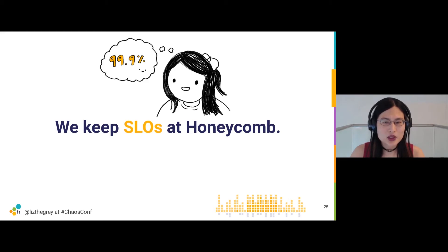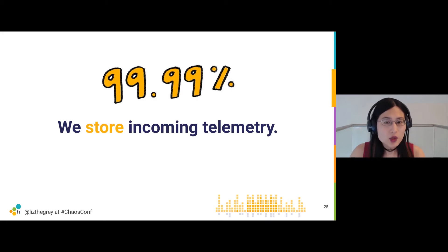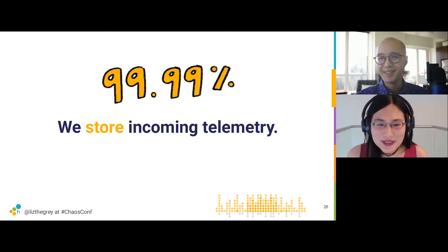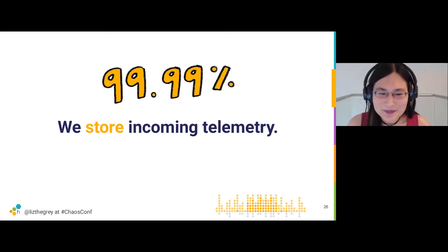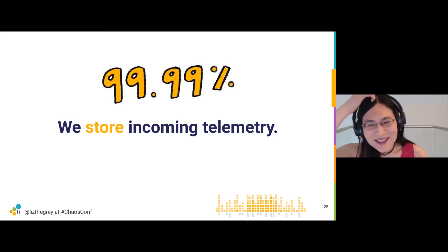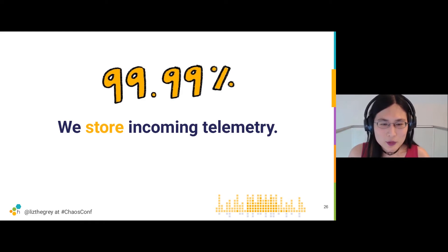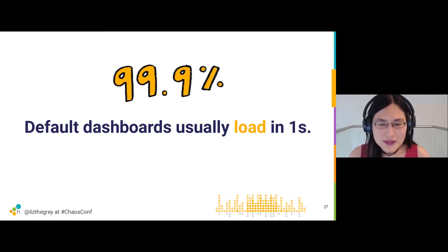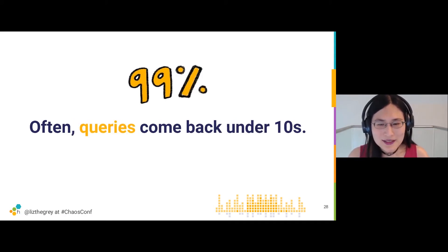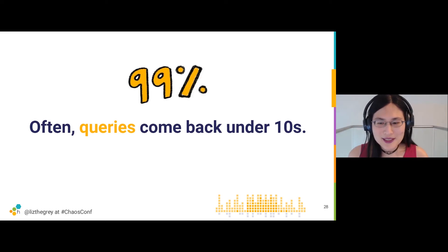Here are what our service-level objectives look like at Honeycomb. We only get one shot to store incoming telemetry, since our customers are streaming data at us all the time. We aim to store incoming telemetry 99.99% of the time — dropping less than 0.01% of incoming telemetry events. Furthermore, we aim to have less than 0.1% of Honeycomb APM homepage loads take more than a second, and we aim to have generic queries fail less than 1% of the time. That's our reliability target because it meets the expectations of our customers.